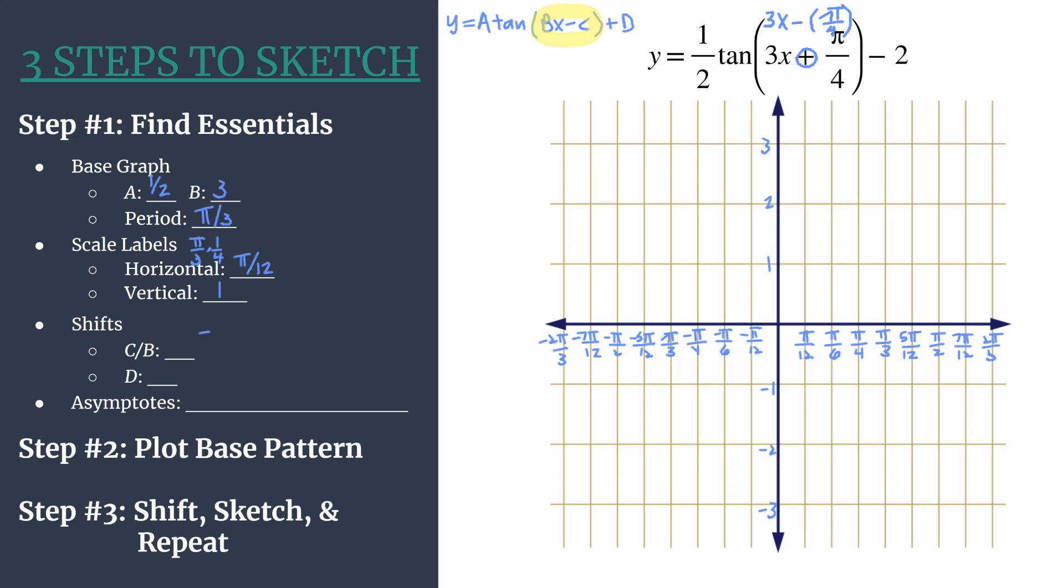Let's find that. We have negative π/4 is c and we're dividing by b, which is 3. Dividing by 3 is the same thing as multiplying by 1/3. We see that we should be moving left π/12. Our phase shift is negative π/12, and that'll be equal to one horizontal grid unit with how we've labeled our graph.